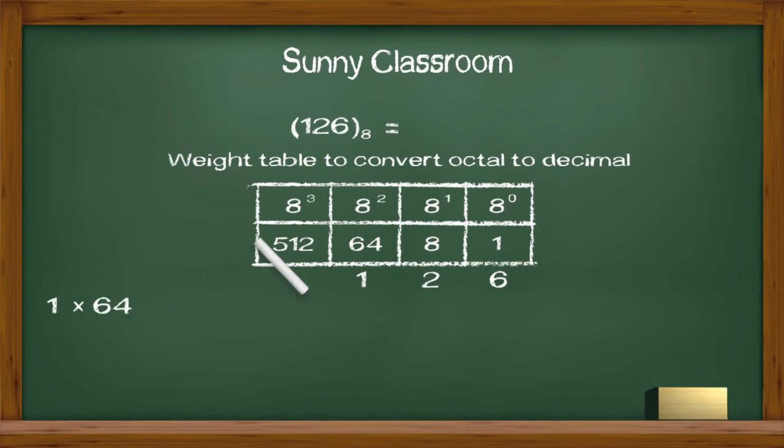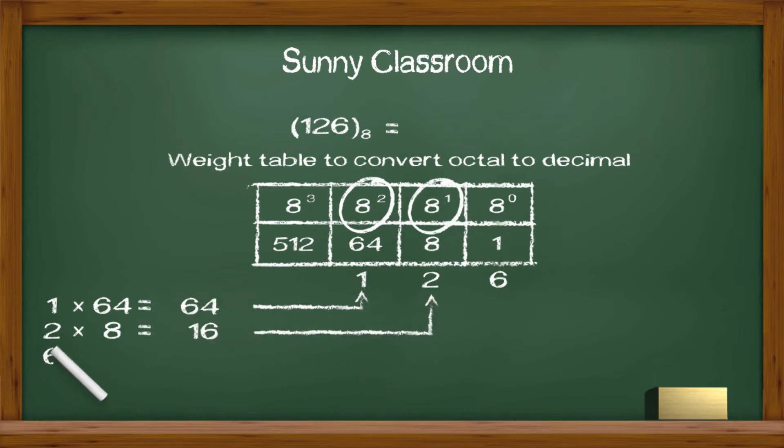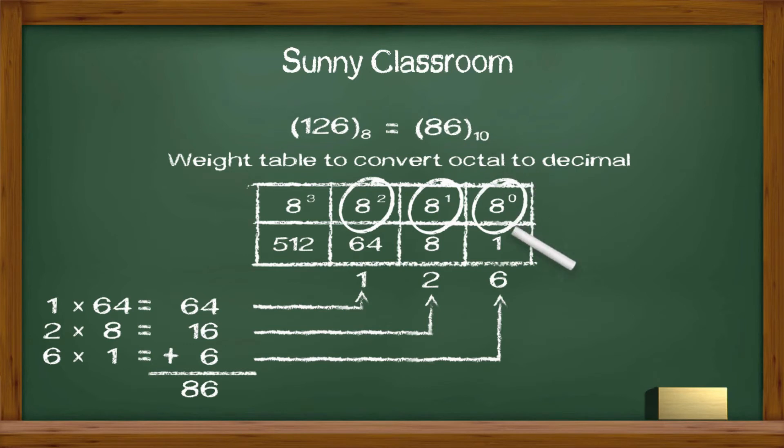1 times 8 to the second power, we get 64. 2 times 8 to the first power, and we get 16. 6 times 8 to the zero power, and we get 6. Now we add them up, and we get 86. Thus octal number 126 is 86 in decimal.